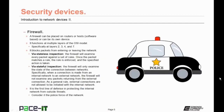First up is the firewall. A firewall can be placed on routers or hosts — it can be software-based or it can be its own device. A firewall functions at multiple layers of the OSI model, specifically at layers 2, 3, 4, and 7. A firewall can block packets from entering or leaving the network through one of two methods. It can do stateless inspection, in which the firewall examines every packet that enters or leaves the network against a set of rules. Once the packet matches a rule, the rule is enforced and the specified action is taken.